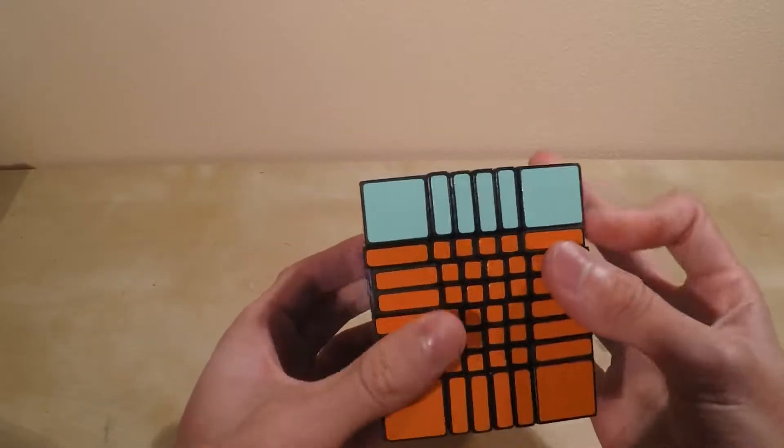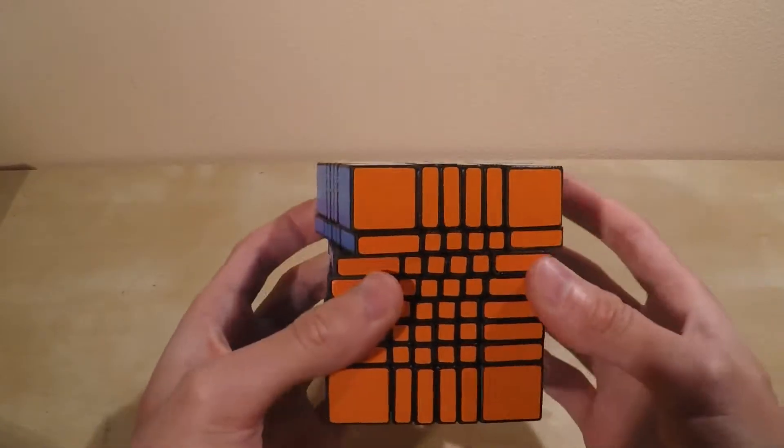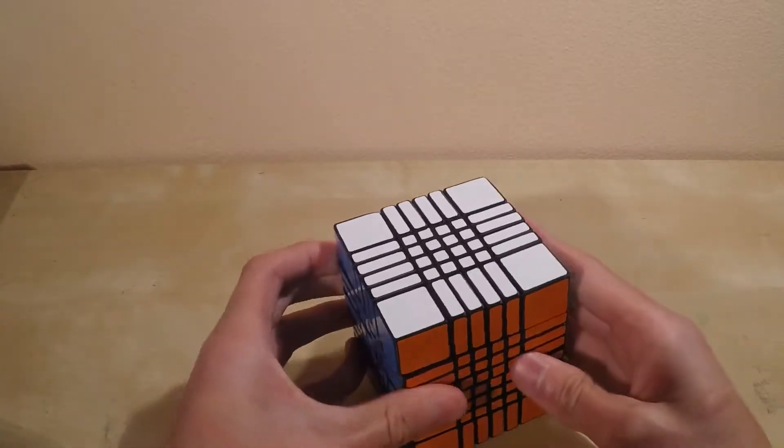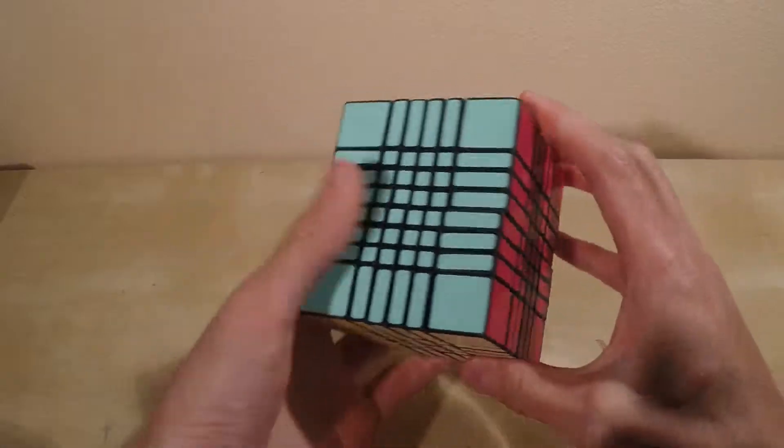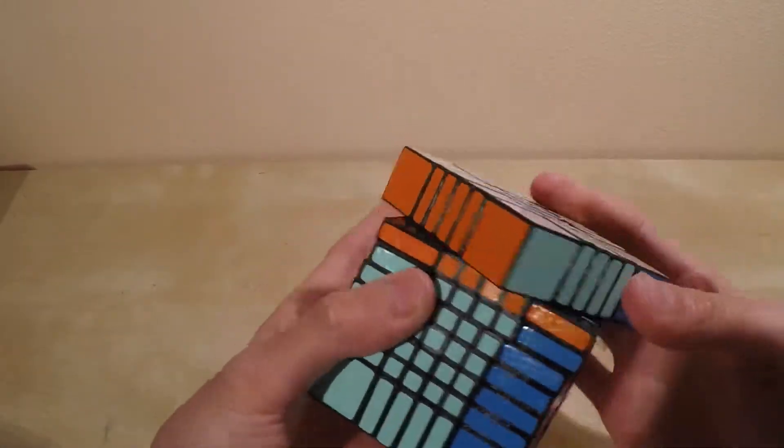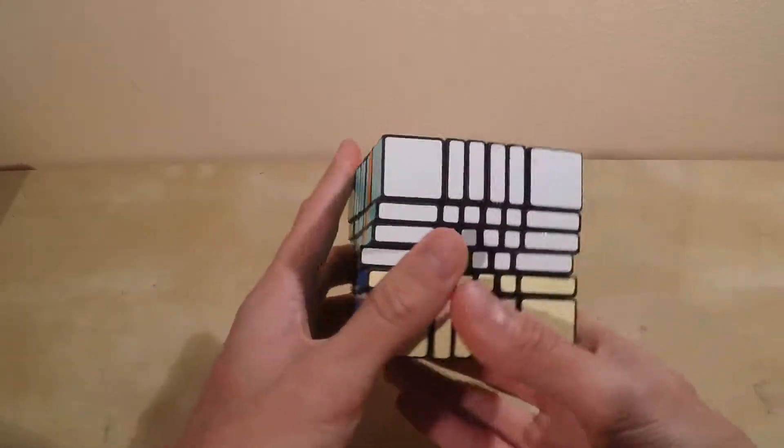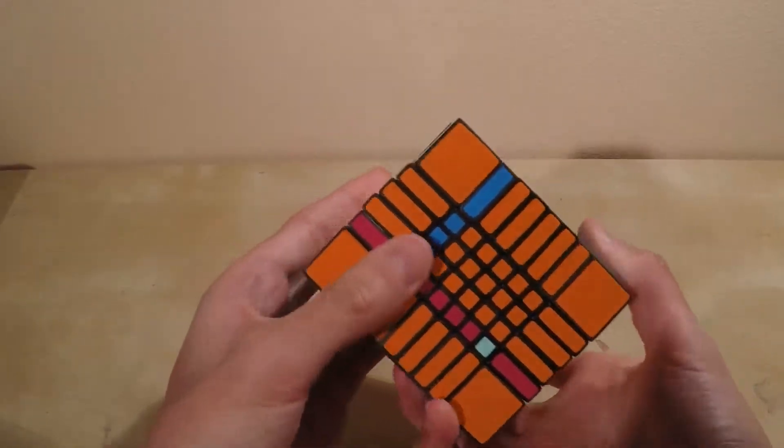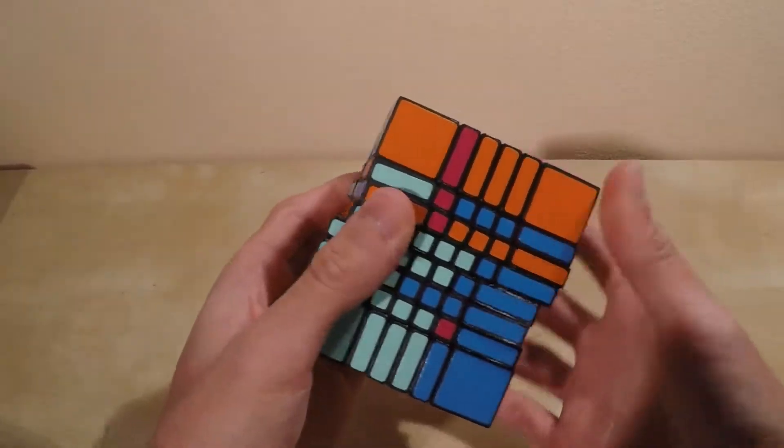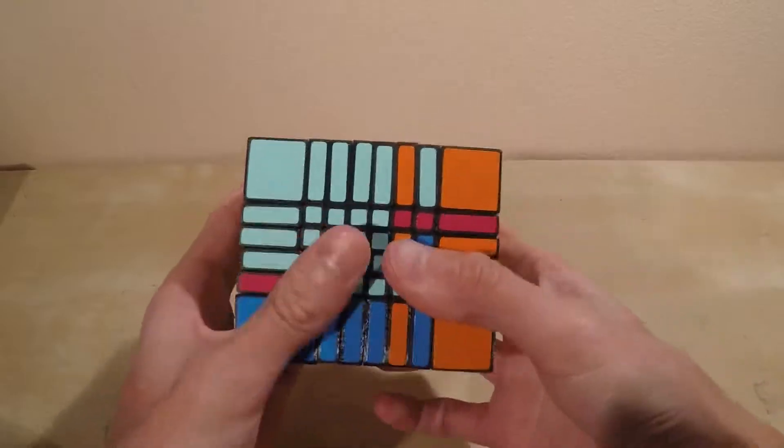And I think the only thing left to do is to scramble it. So what I'm going to do is first scramble it like a regular. Sorry. I'm just going to scramble it without shapeshifting it. That way I can get a full scramble first.